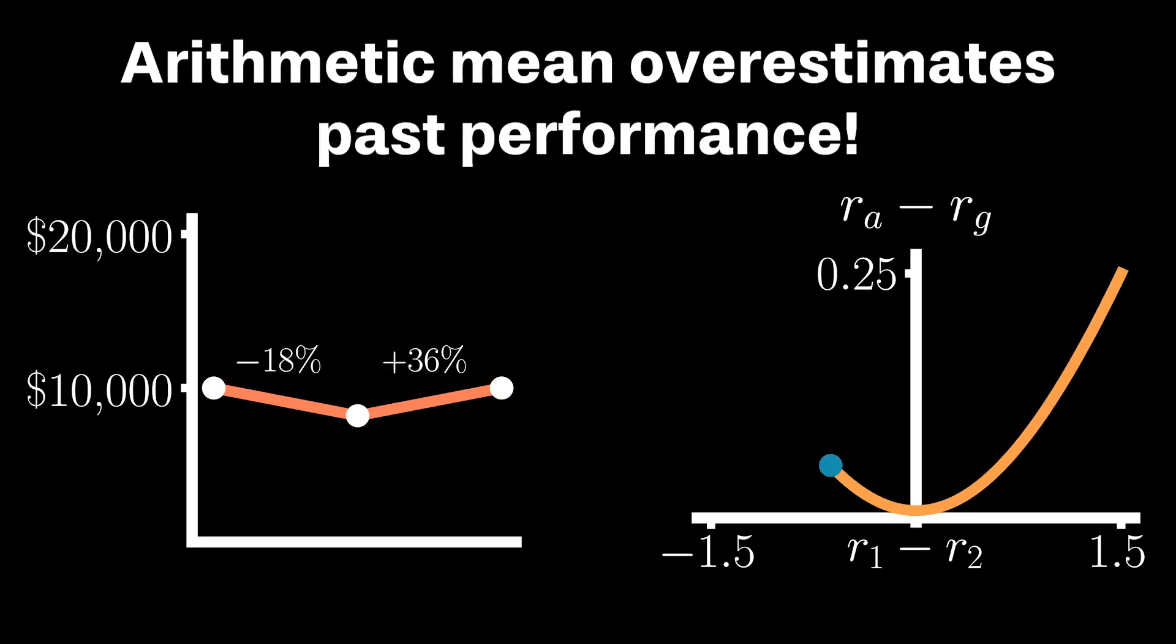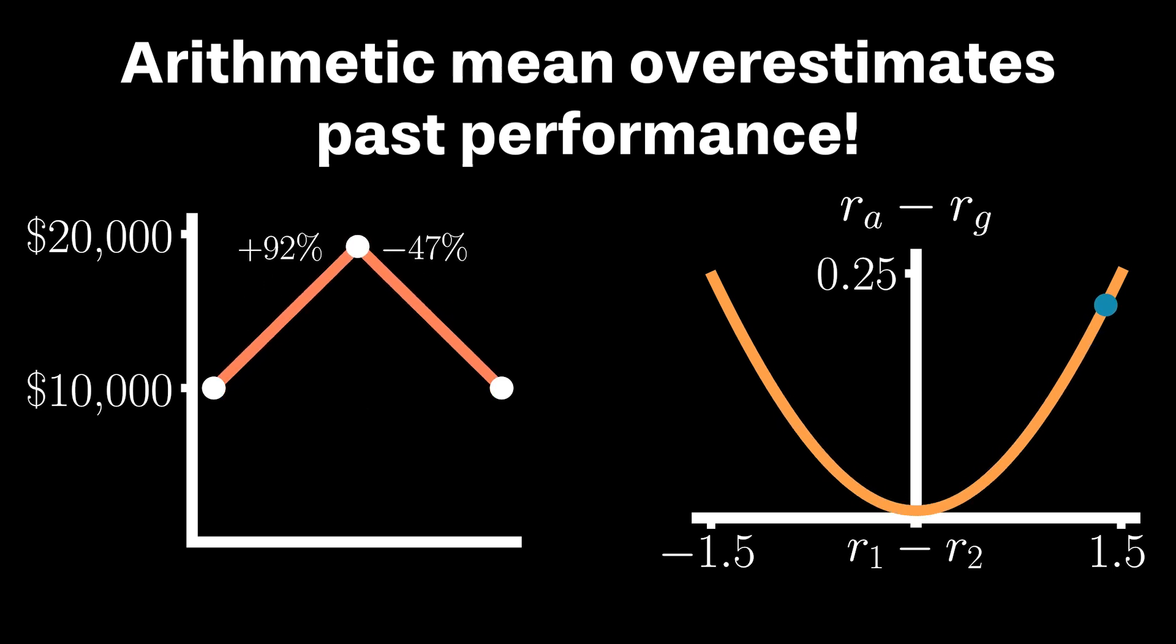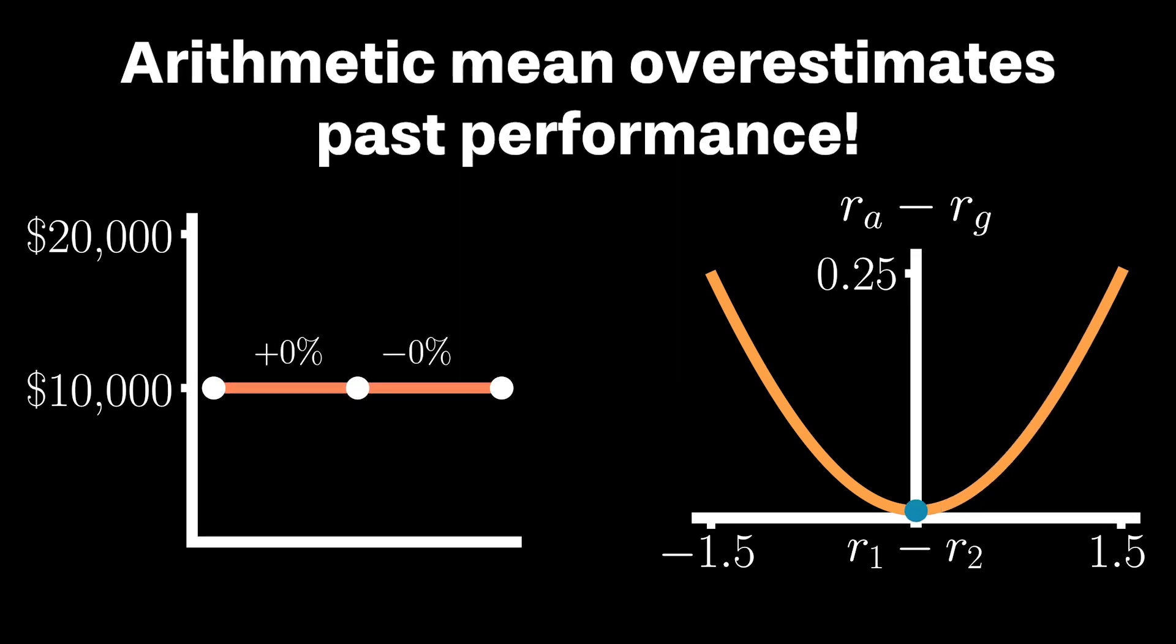What we can clearly see is that the arithmetic mean is always greater than or equal to the geometric mean. And in fact, the only case where the two means are the same is when both growth rates, R1 and R2, are the same. And there is a nice simple proof to show this.